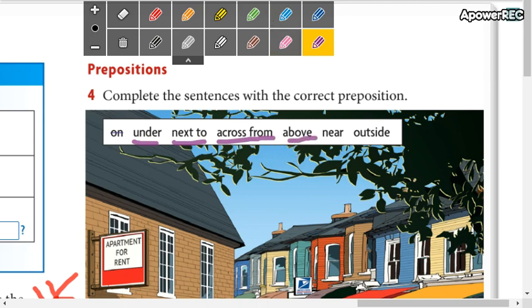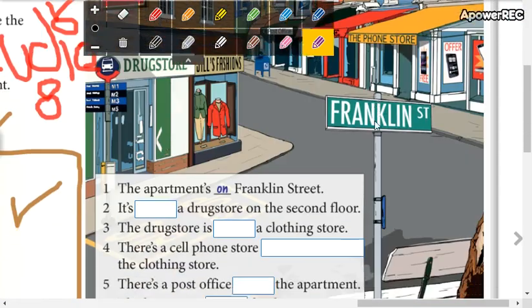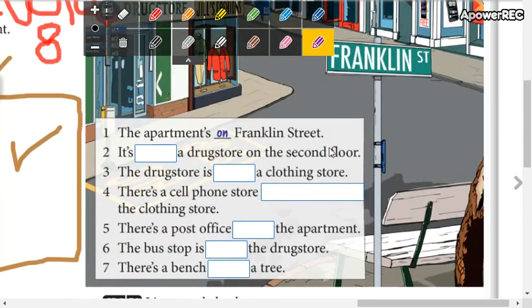Above - encima. Near - cerca. Outside - fuera o afuera de. So you are going to complete the sentences using these prepositions. Complete, you can start now, complete the sentences.